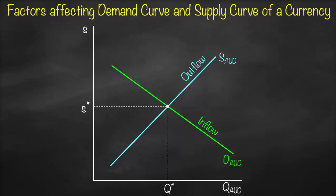Exports are considered inflow — when we export, we receive money. So higher exports means higher inflow, which means the demand curve shifts to the right. For imports, when we import we pay — it's outflow. So higher imports means higher outflow, meaning the supply curve shifts to the right. Conversely, lower imports means lower outflow, so the supply curve shifts to the left. Demand shifts only with inflow; supply shifts only with outflow.